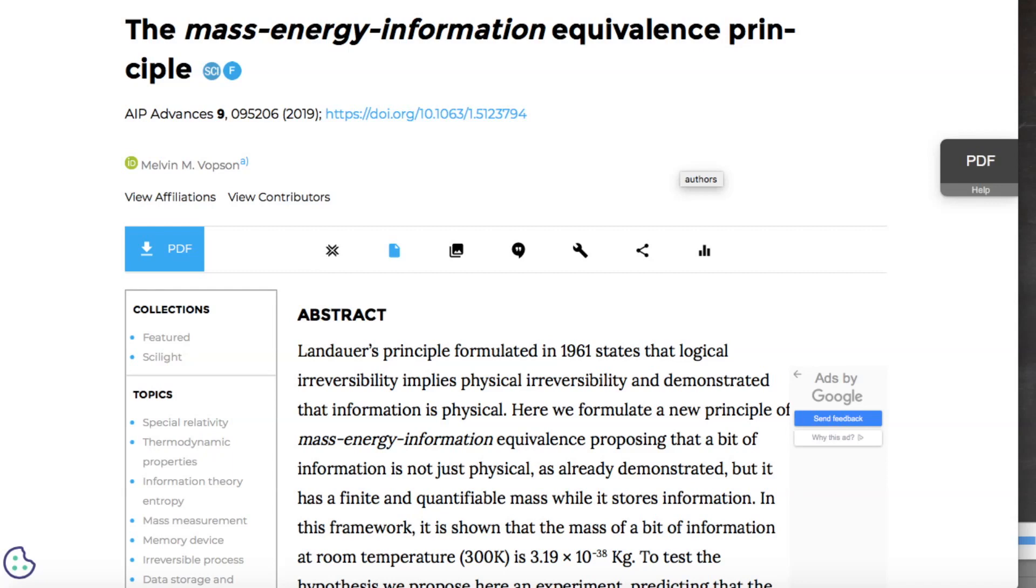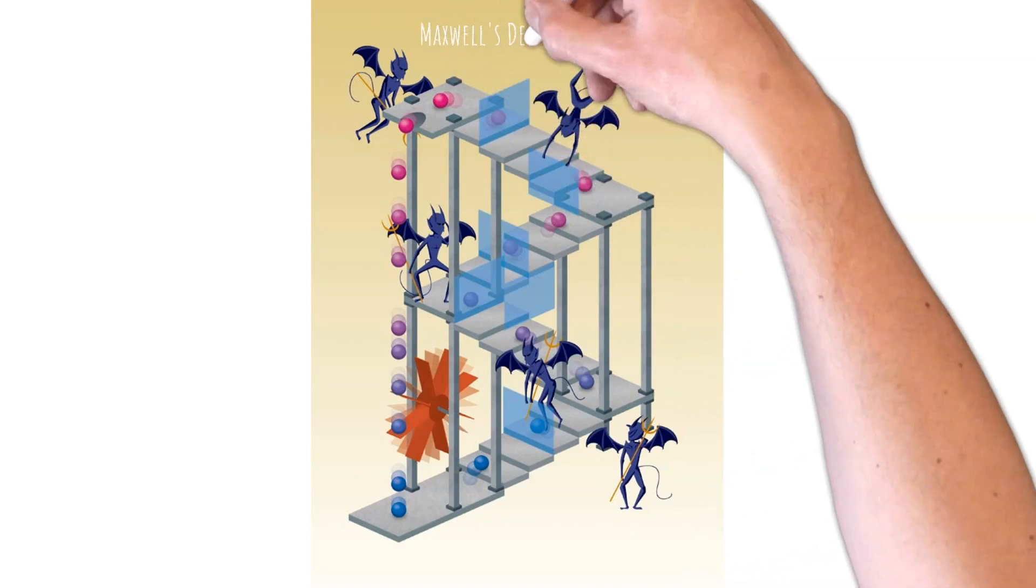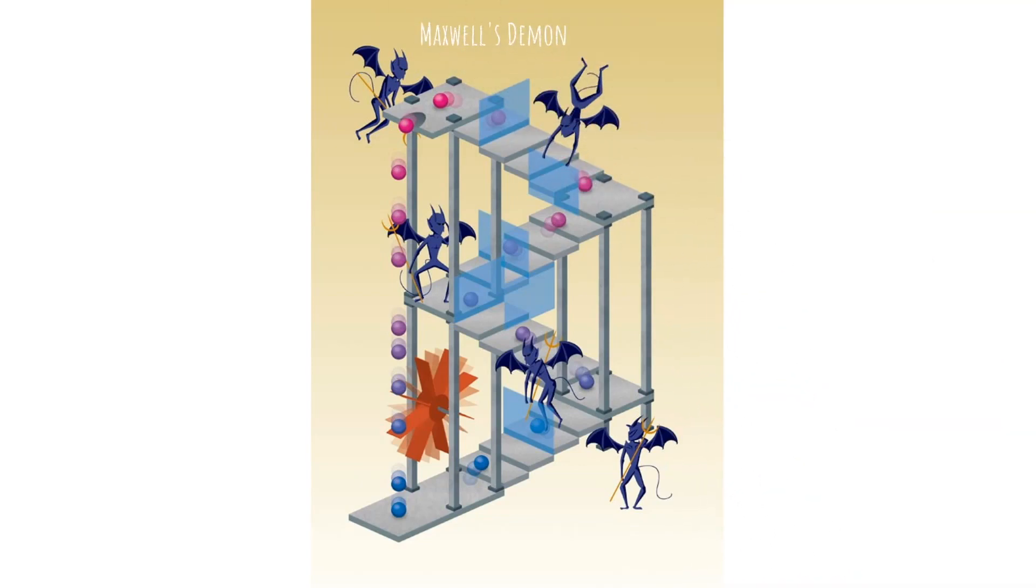A second example to add credibility to the information has mass hypothesis is a paper written by Japanese physicists in 2010, where they demonstrated conversion of information into energy without violating the second law of thermodynamics. It's a pretty complicated experiment, but essentially they made a particle do work by receiving information rather than energy.